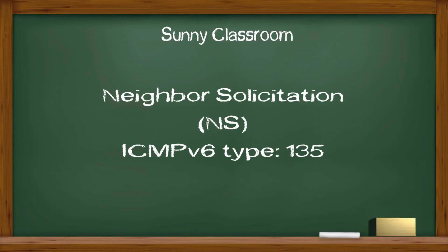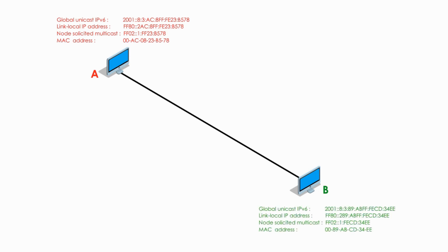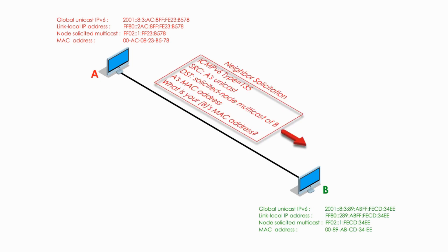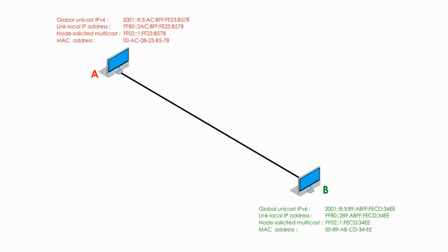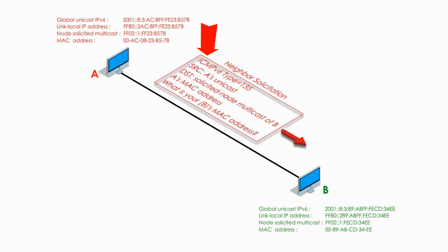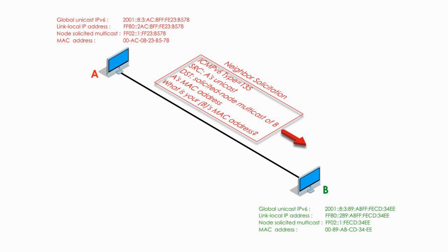Now let me talk about Neighbor Solicitation. Neighbor Solicitation is used by nodes to determine the link layer address of a neighbor, or to verify the neighbor is still reachable. For example, if Computer A wants to know the MAC address of Computer B, Computer A sends a Neighbor Solicitation packet. This packet header includes ICMPv6 type 135, source address is Computer A's unicast address, and destination address is B's solicited-node multicast address. The Neighbor Solicitation contains a request like: What's your MAC address?